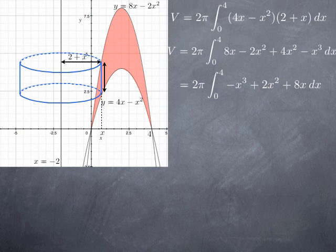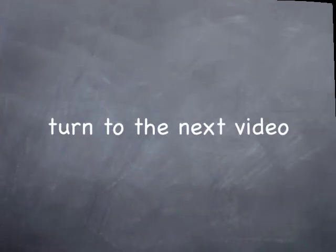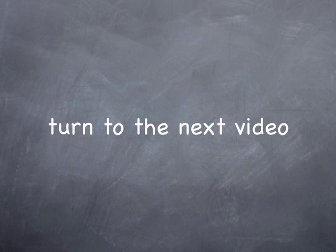We use the fundamental theorem of calculus to calculate this integral. The antiderivative is negative x to the fourth over 4 plus 2 thirds x cubed plus 4x squared, evaluated between 0 and 4. The value at 0 is 0. At 4, we get negative 4 cubed plus 2 thirds of 4 cubed plus 4 squared times 4 — the terms cancel except for 2 thirds of 4 cubed, which is 128 thirds. Multiplying by 2π gives 256π over 3. We will have a few more examples in the next video where we use both methods.